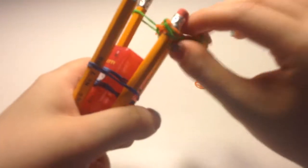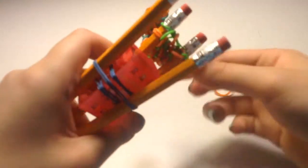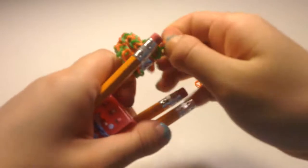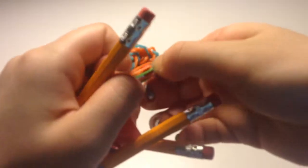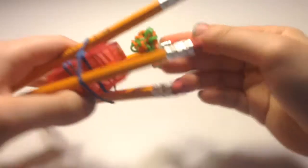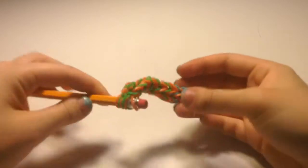Now to start taking the bracelet off, you want to move all of the rubber bands onto one peg or one pencil. Be sure to move all of them over to keep them in place. You can see here that now I have all the rubber bands on one pencil. I can just take that pencil out.